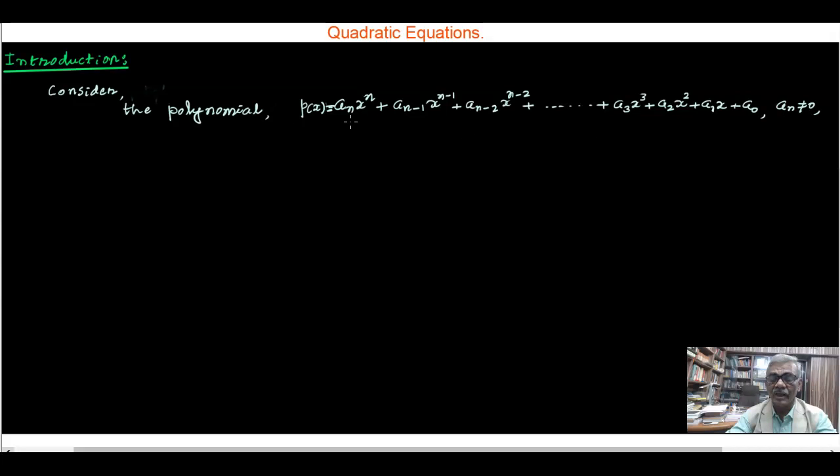Because otherwise it is going to be a polynomial whose degree is less than n, and therefore we have to restrict ourselves for the coefficient a_n which is to be not 0. And if we equate p(x) = 0,